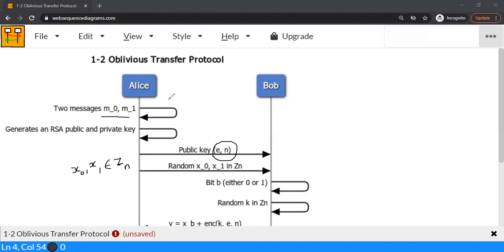Bob, who knows whether he wants to read M0 or M1, maybe he wants to read M0. Then in this case, his B will be 0. If he wants to read about M1, his bit will be 1. He randomly selects a K in Zn, meaning K is a number from 0 through N, excluding N. What is the next step?